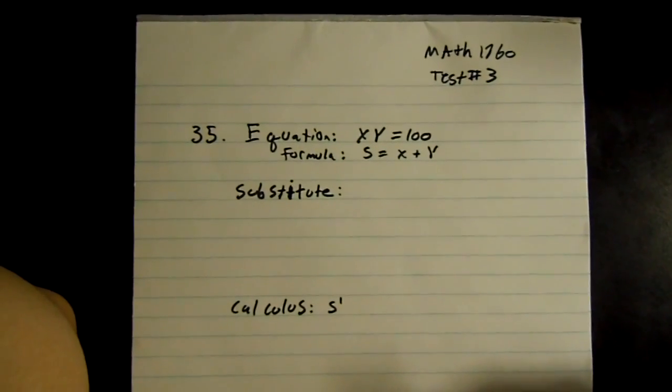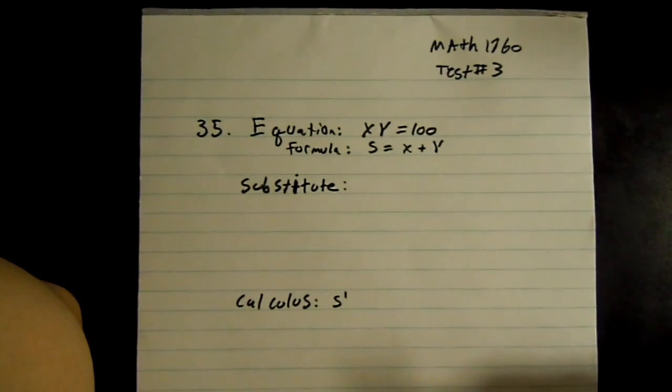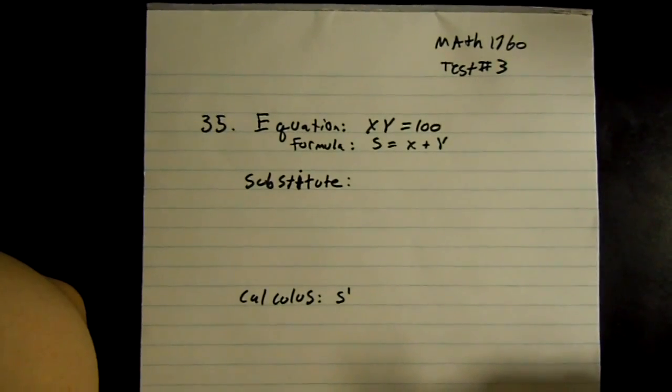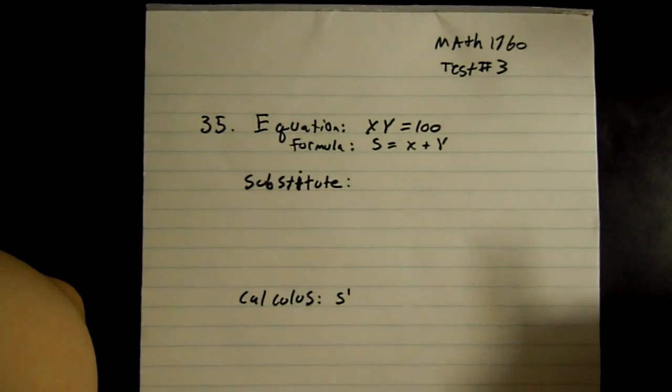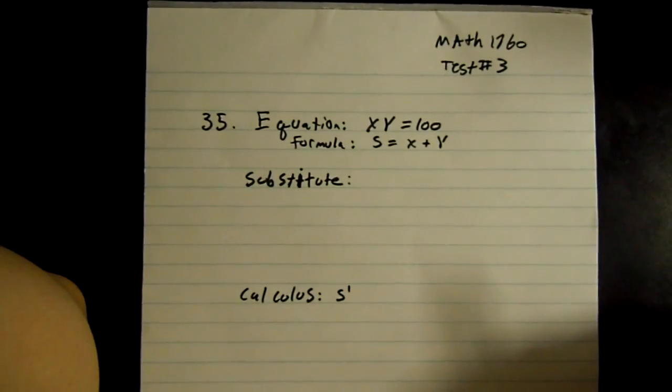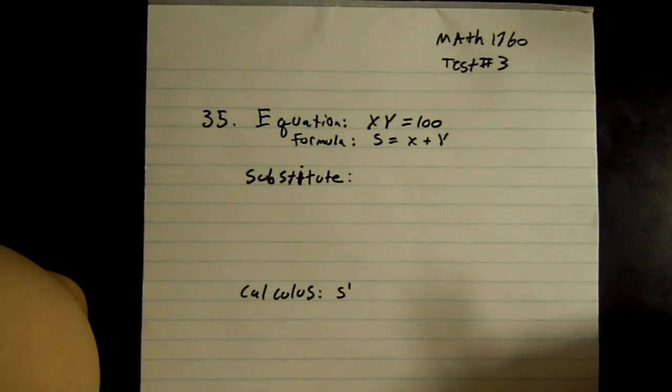This is Mark de Tauras and I will be doing my video on problem 35 from the practice test. It wants us to find two positive numbers whose product is 100 and their sum is a minimum.